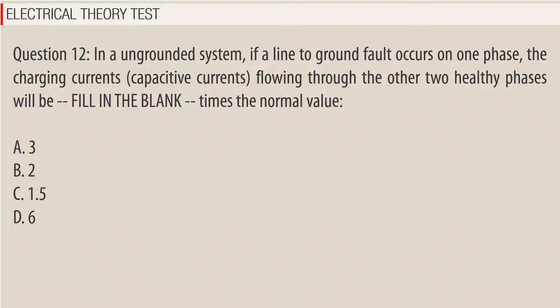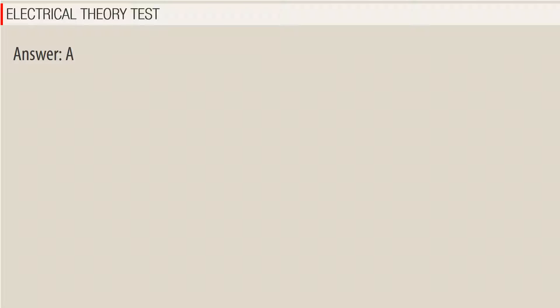Question 12: In an ungrounded system, if a line-to-ground fault occurs on one phase, the charging currents (capacitive currents) flowing through the other two healthy phases will be _____ times the normal value. A. Three, B. Two, C. 1.5, D. Six. Answer: A.